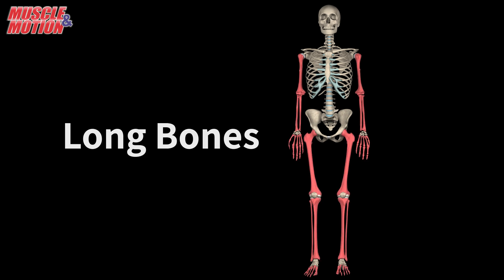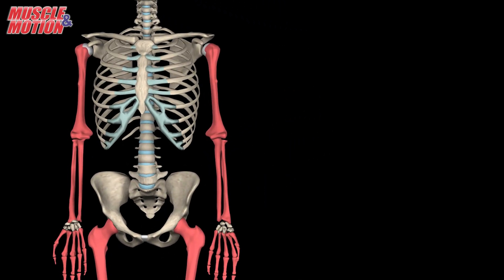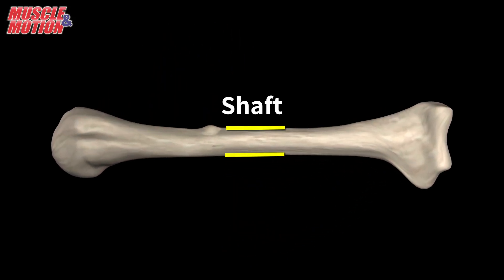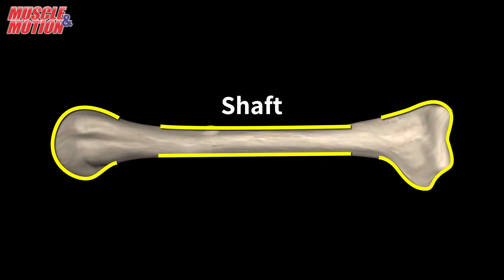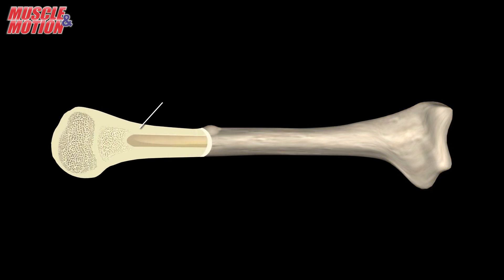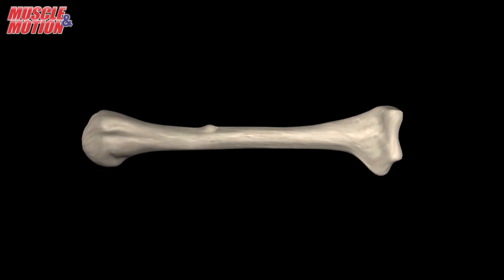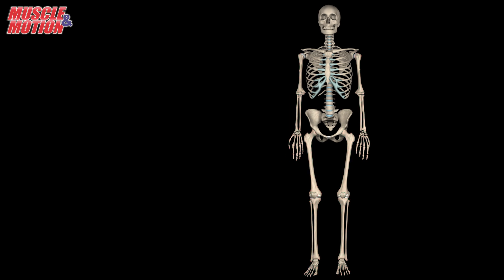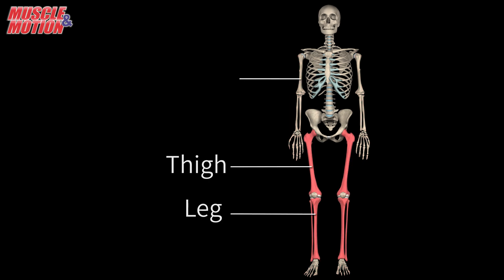Let's start with the long bones. These bones are longer than they are wide. They consist of a long shaft with two bulky ends or extremities, much like the classic dog bone. They are primarily compact bones, but may have a large amount of spongy bone at the ends or extremities. Long bones include thigh, leg, arm, and forearm bones.